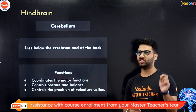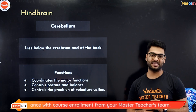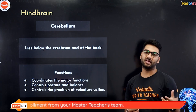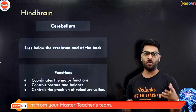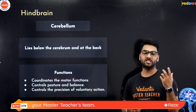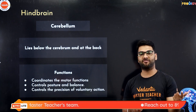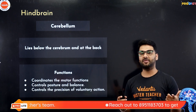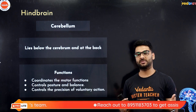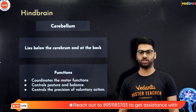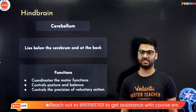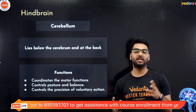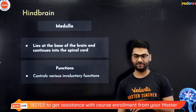A commonly asked exam question is: why does a person under the influence of alcohol walk clumsily? It is because alcohol directly affects the cerebellum — the part of the brain that controls posture and voluntary actions. When the cerebellum is affected by alcohol, the person is unable to walk straight.